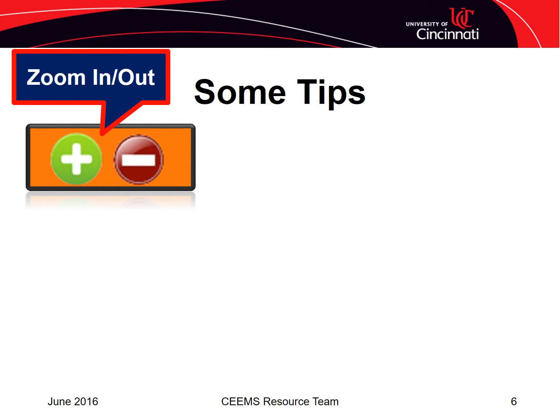As you navigate to different tabs within the unit file generator, you should be aware of some helpful tools that have been embedded. Zooming in and out on any of the tabs can be accomplished by clicking on the plus or minus signs. Each time you click, it will zoom in or out depending on which one you click. This makes it easier to see specific sections more clearly when you zoom in, or gives you a broader perspective by zooming out.